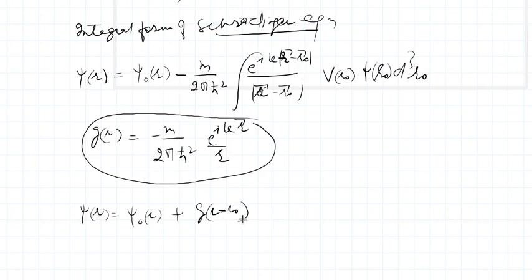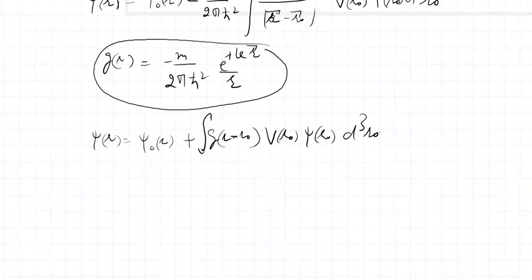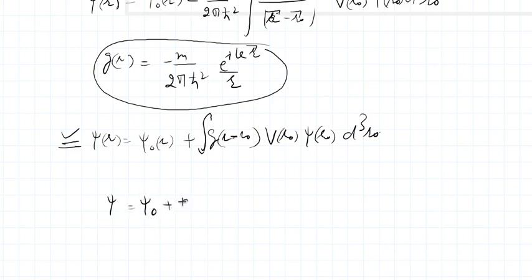Using this Green's function — which acts like a propagator — the above equation reduces to: psi(r) equals psi-naught(r) plus the integral of G(r minus r-naught) times V(r-naught) times psi(r-naught) d-cubed r-naught. In simplified notation: psi equals psi-naught plus G V psi, which is an iterative equation.